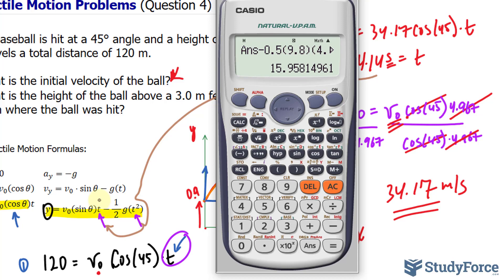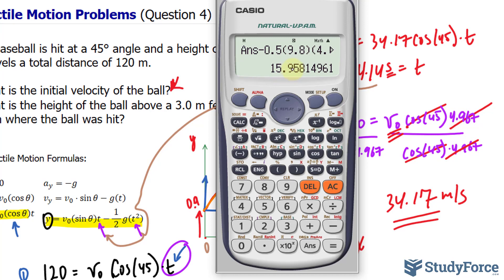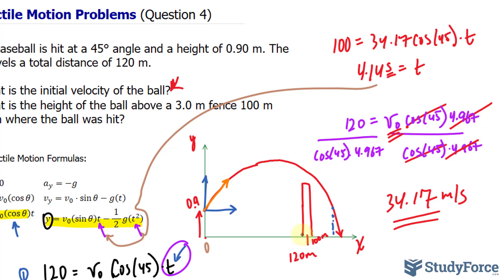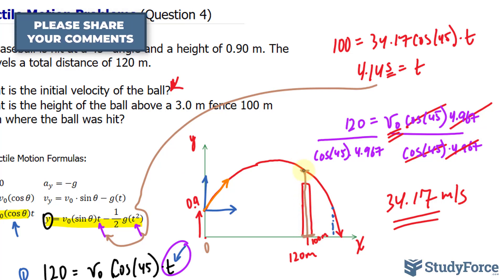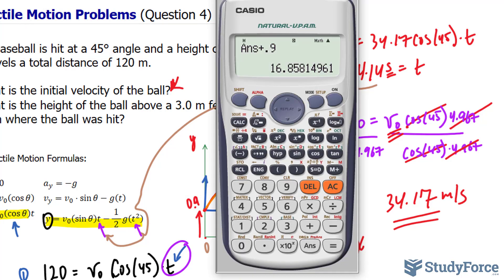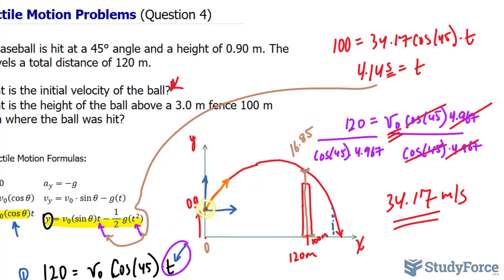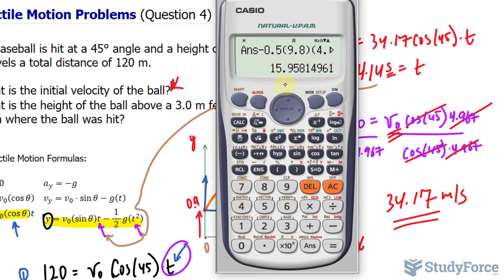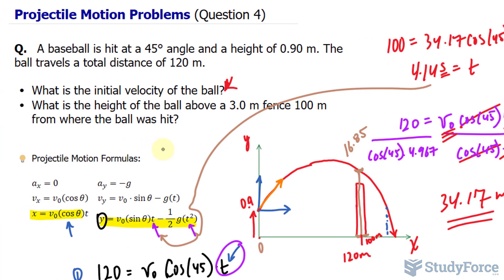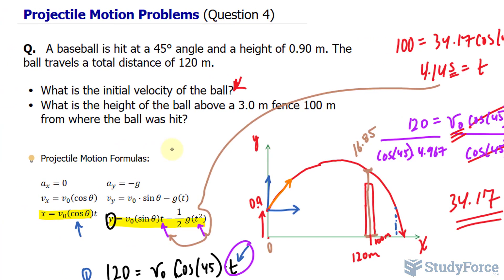Now remember, the ball was hit at 0.9 meters above the ground. So we have to take this value and add 0.9 to it. Therefore, the ball is 16.85 meters from the ground. So, from here all the way to the ball, it is 16.85. And from where it was hit to where it is, it is the value before that which is 15.95. And there you have it. Question number 4 answered for you. If you need more help, make sure to watch question 5 in this series.